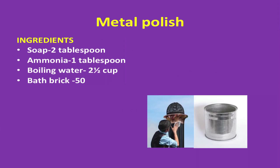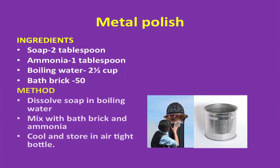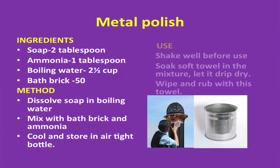Metal polish — ingredients: soap 2 tablespoons, ammonia 1 tablespoon, boiling water 2½ cups, bath brick 50 grams. Method: dissolve soap in boiling water, mix with the bath brick and ammonia, cool and store in an airtight bottle. Use: shake well before use, soak soft toweling in the mixture, let it drip dry, then wipe and rub with this toweling.